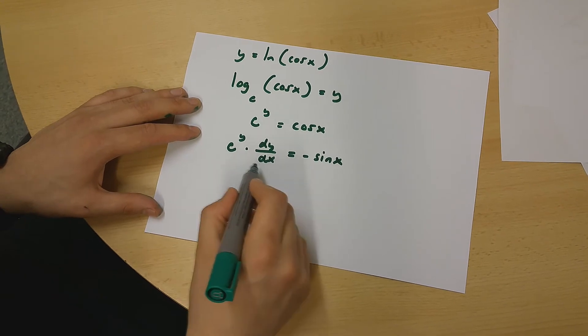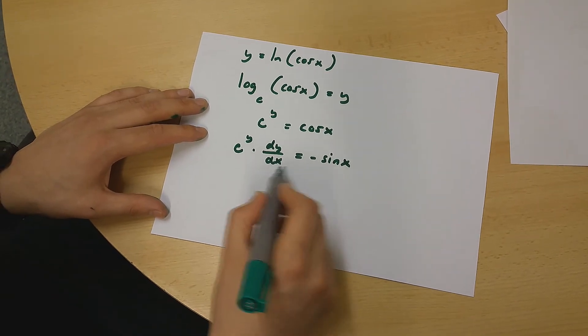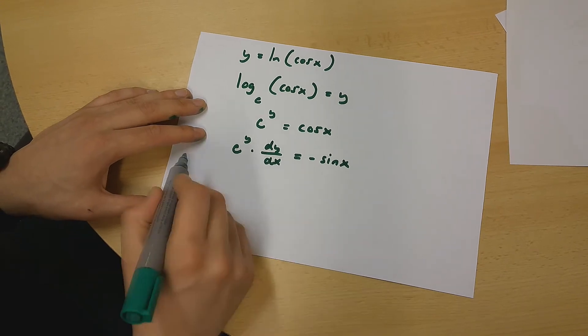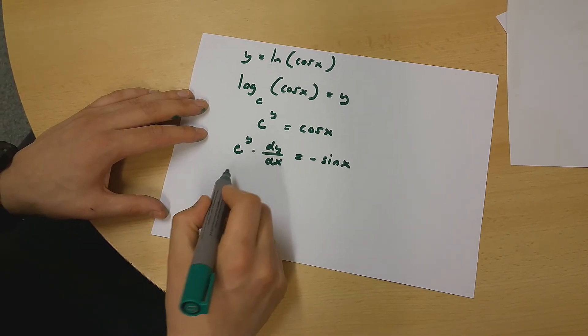And from here, we only have to divide both sides of this equation by e to the power of y to get dy over dx.